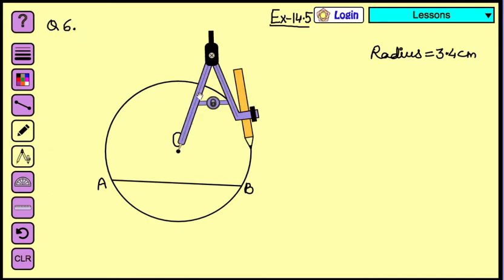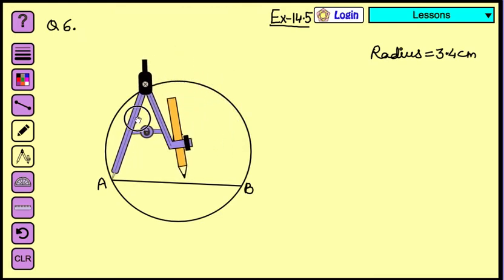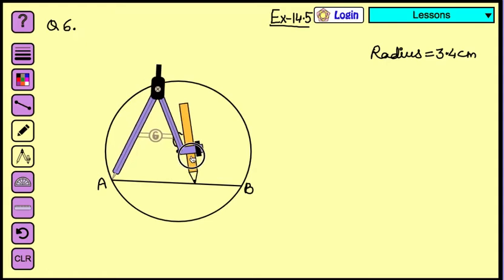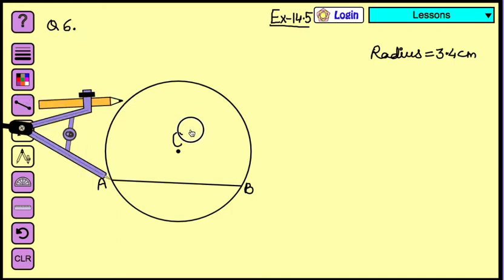Place it at one end of the chord. This distance between the needle and the pencil should be a little bit bigger than the halfway, or you can say a little bit smaller than AB. You can drag it a little bit more if you want to.